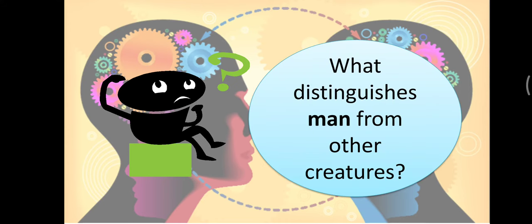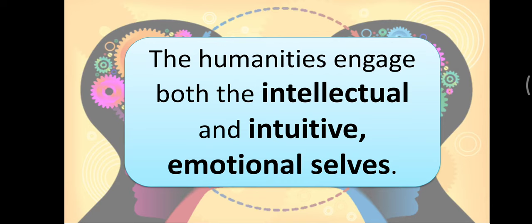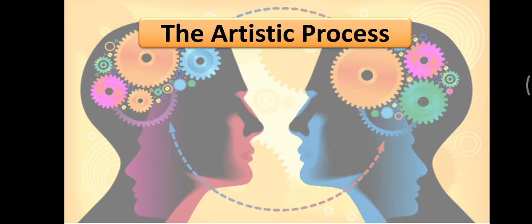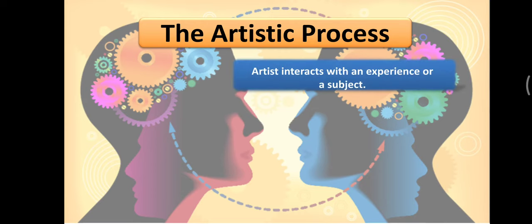What distinguishes man from other creatures? Let's have a quick review. The humanities engage both the intellectual and intuitive emotional selves. Yes, animals have feelings and can think, but our level is different. We are intellectual individuals with intuitions and emotions, and that's what makes the difference. The artistic process—artist interacts with an experience or a subject.